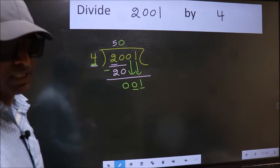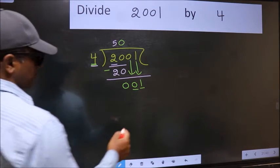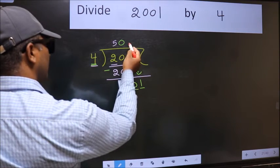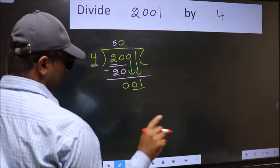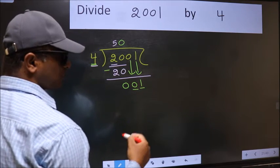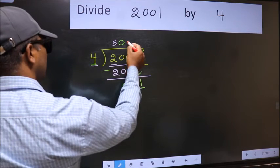Instead, what you should think of doing is which number should we take here? If I take 1, we will get 4. But 4 is larger than 1.